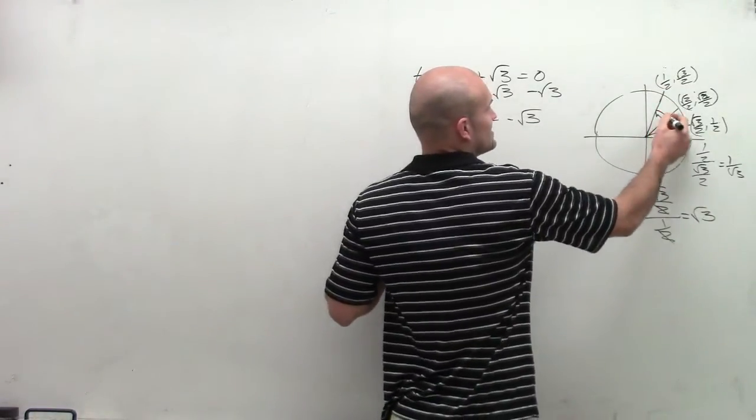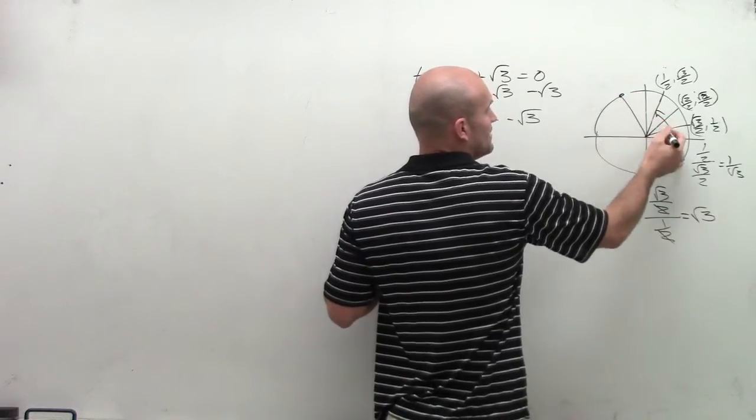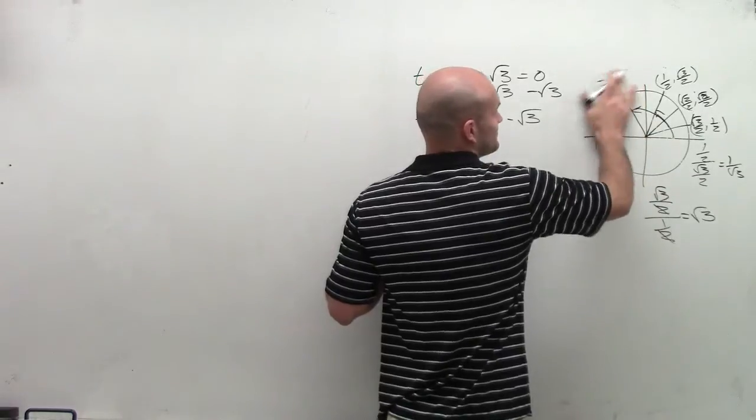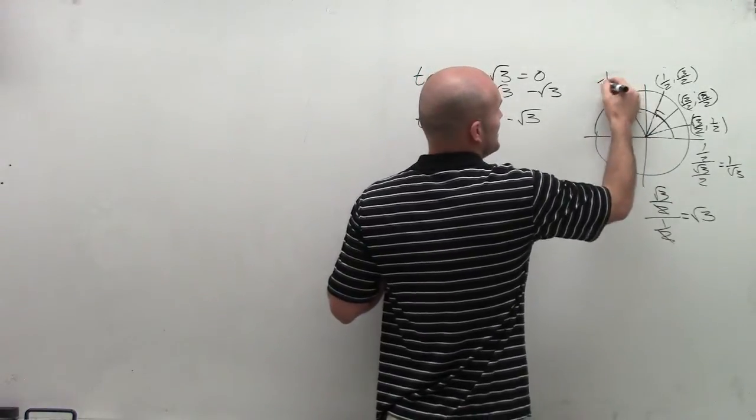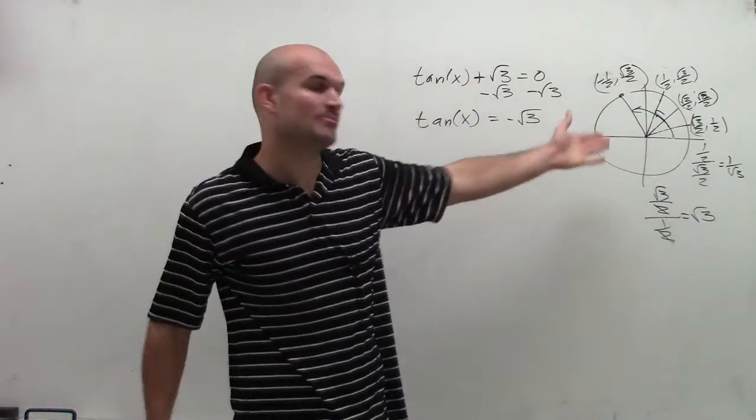Well, if this angle is π thirds, so the next angle over would be 2π over 3, which is going to now leave me with a negative 1 half, comma, square root of 3 over 2. OK, so that was going to be that point.